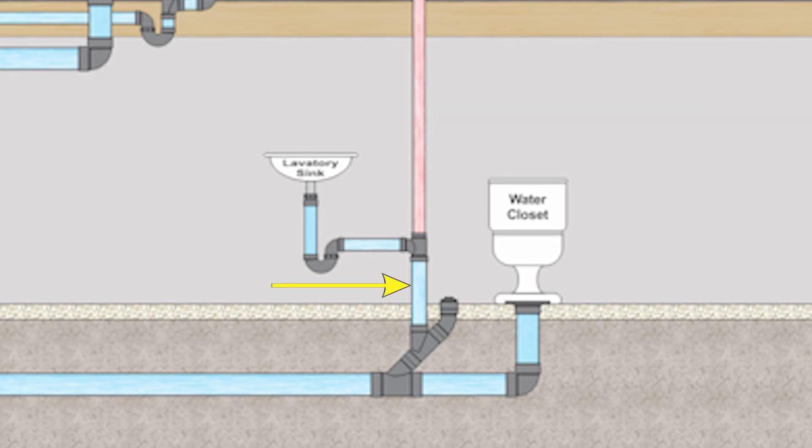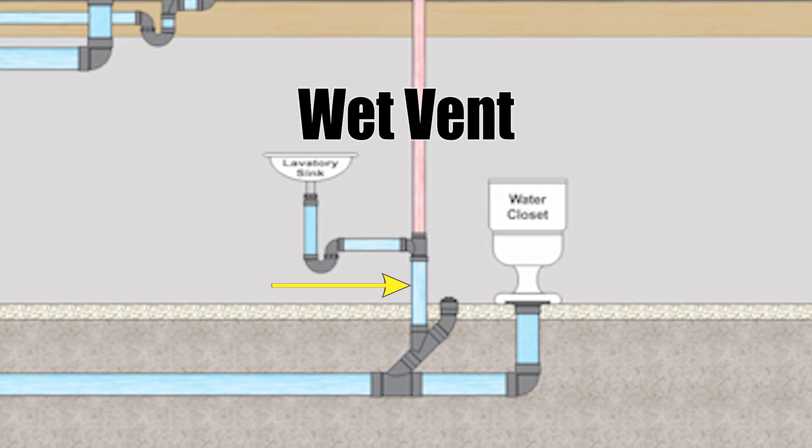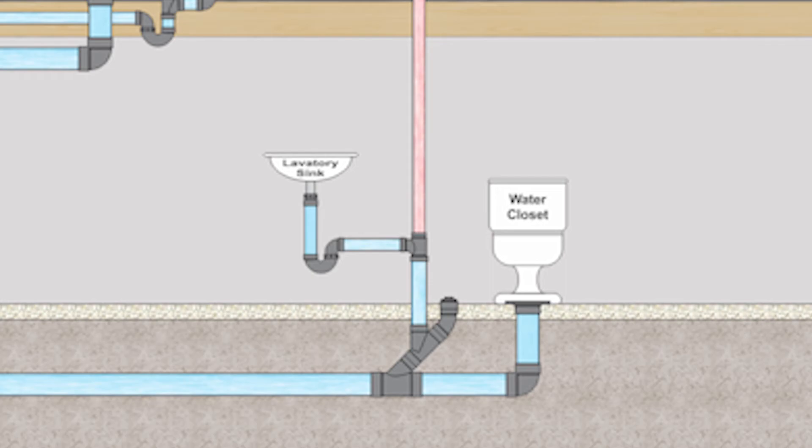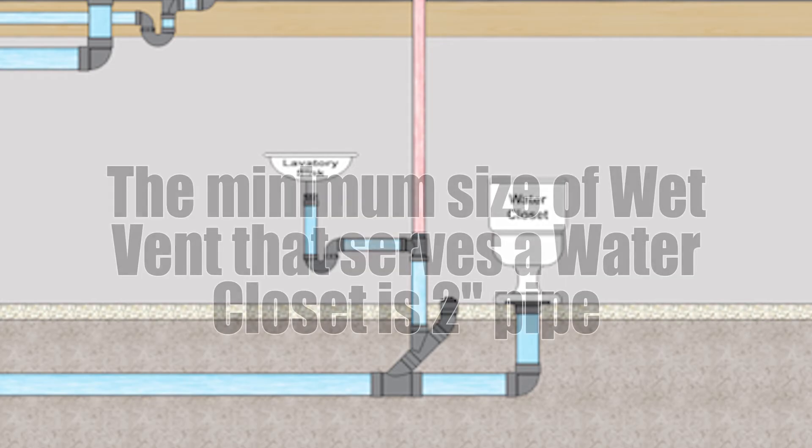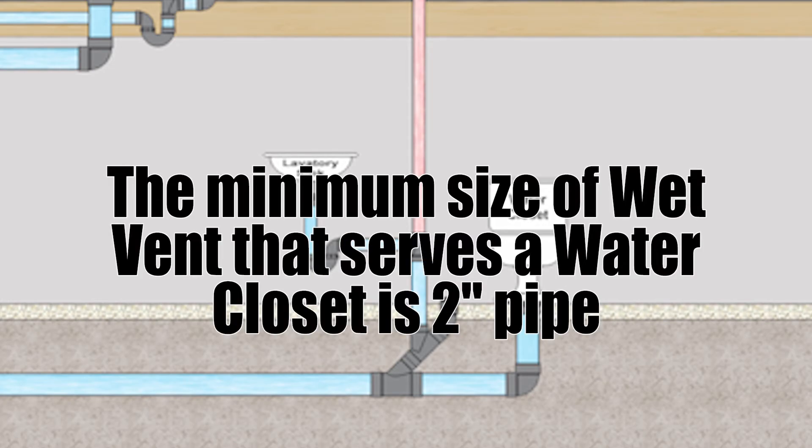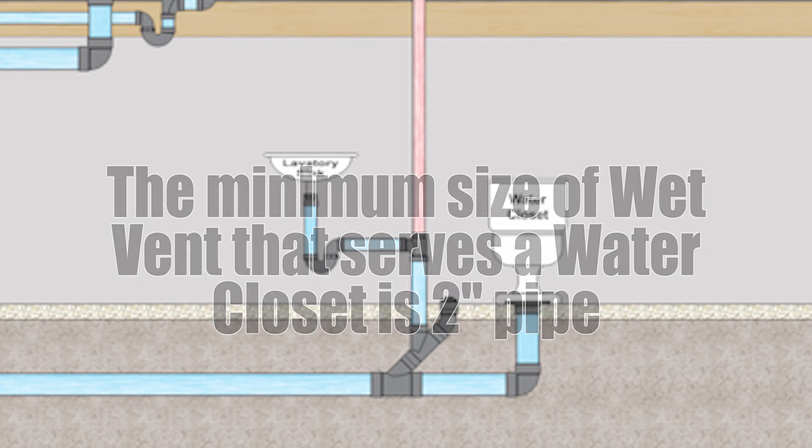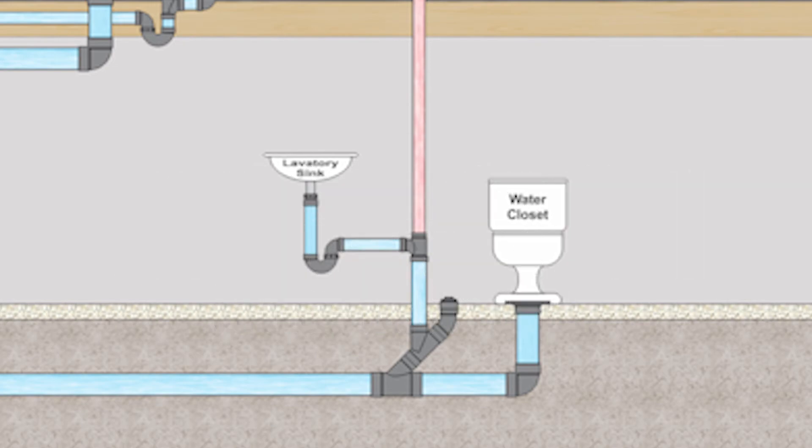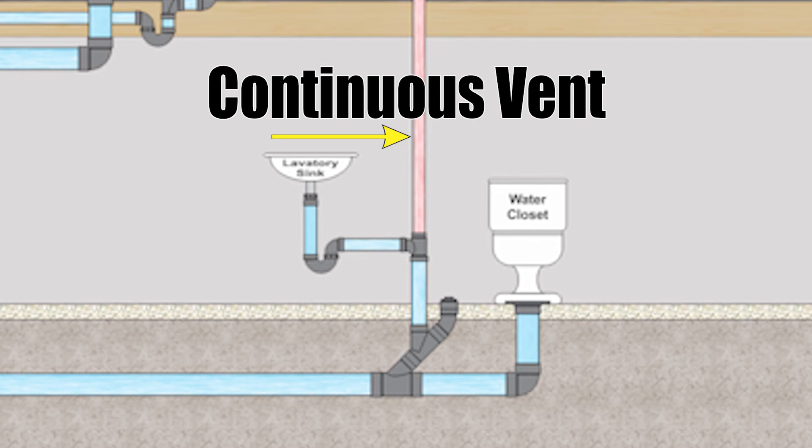If you'll look the water closet has no vent or better yet it does but it goes through a drain that comes down from that lavatory sink. We call that a wet vent meaning it's a pipe big enough to act as a drain and a vent at the same time. The minimum size of a wet vent serving a water closet is two inch. Now wet venting is rather involved and has many codes around it so what we're going to do is take care of that in its own video series.